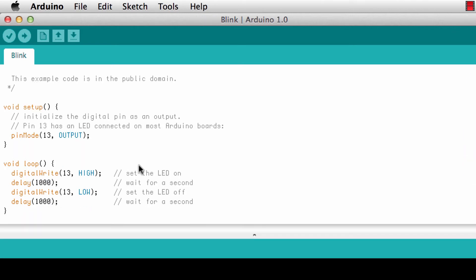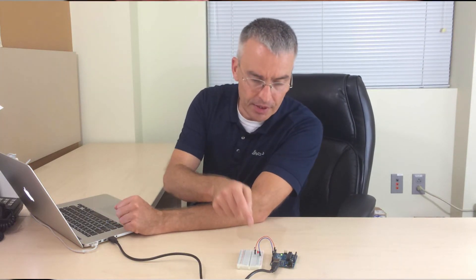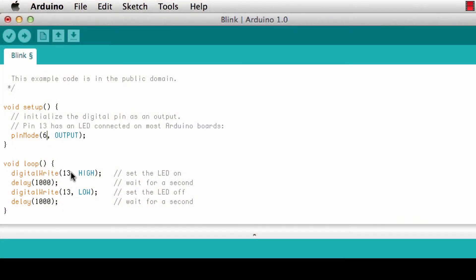The blink example just blinks the built-in LED on the Arduino board. You can try that out for yourself. Just upload the sketch and you'll make this LED blink. Now if we want to blink the LED on pin 6, all we have to do is exchange everything that has to do with pin 13 to pin 6. I'm just putting 6s in here instead of the 13s.